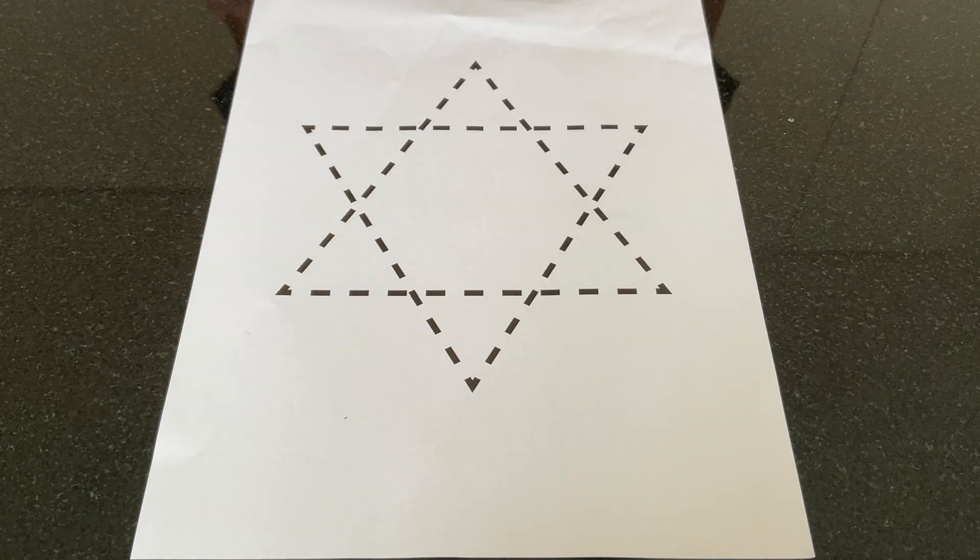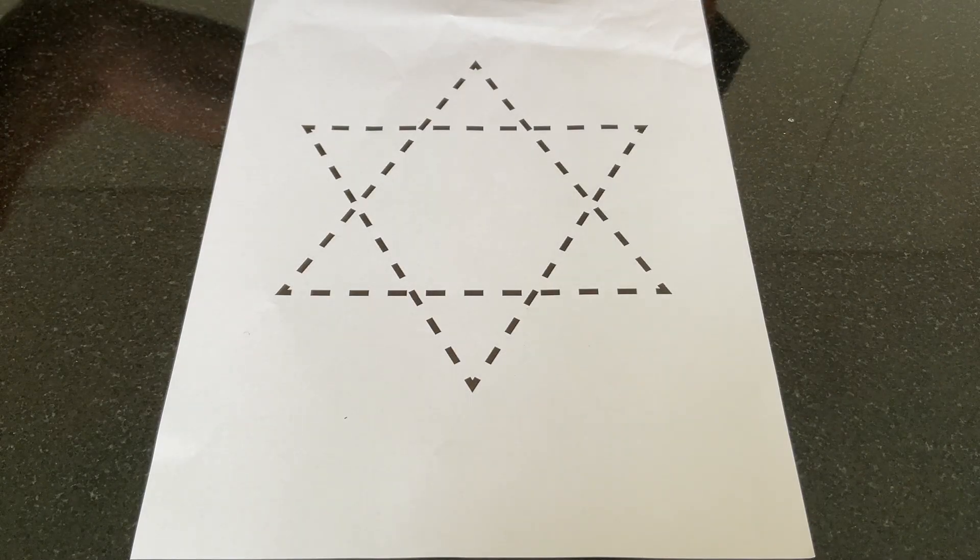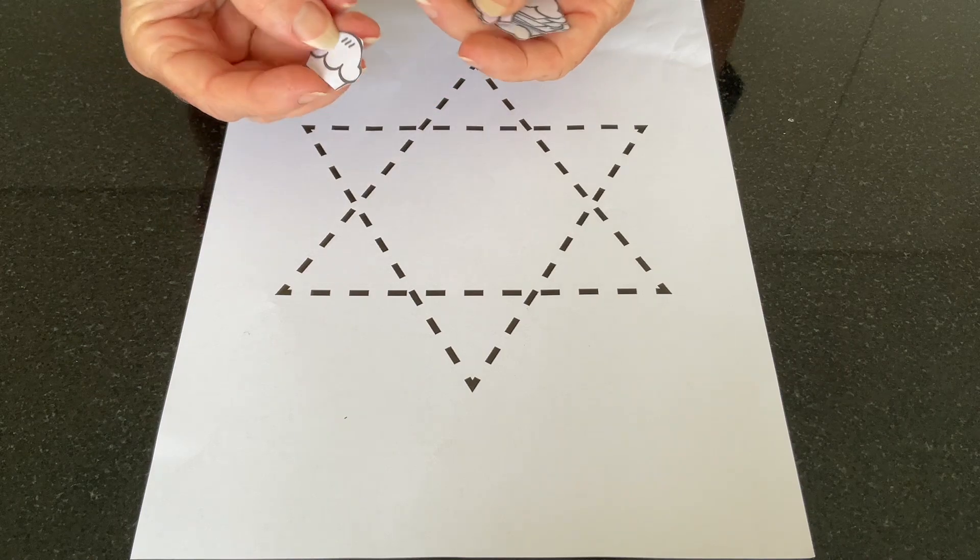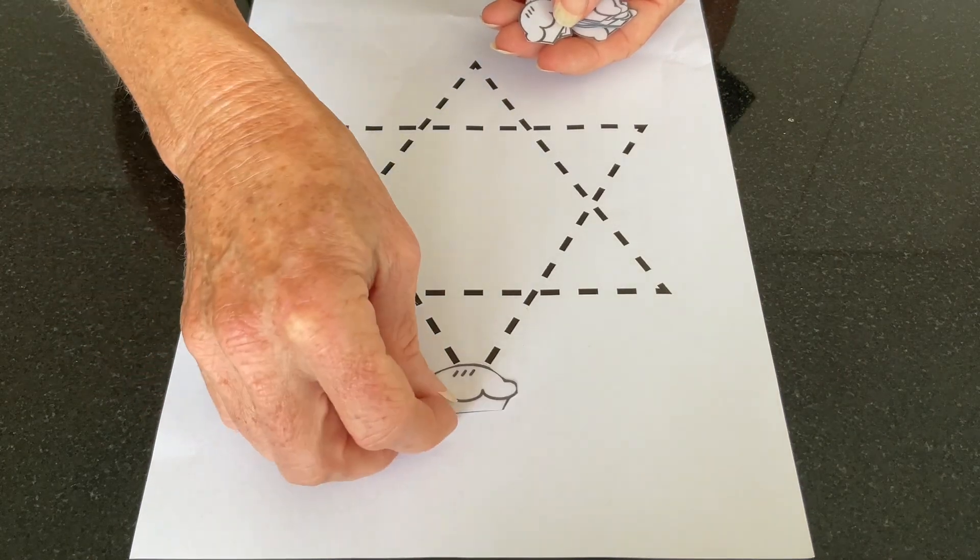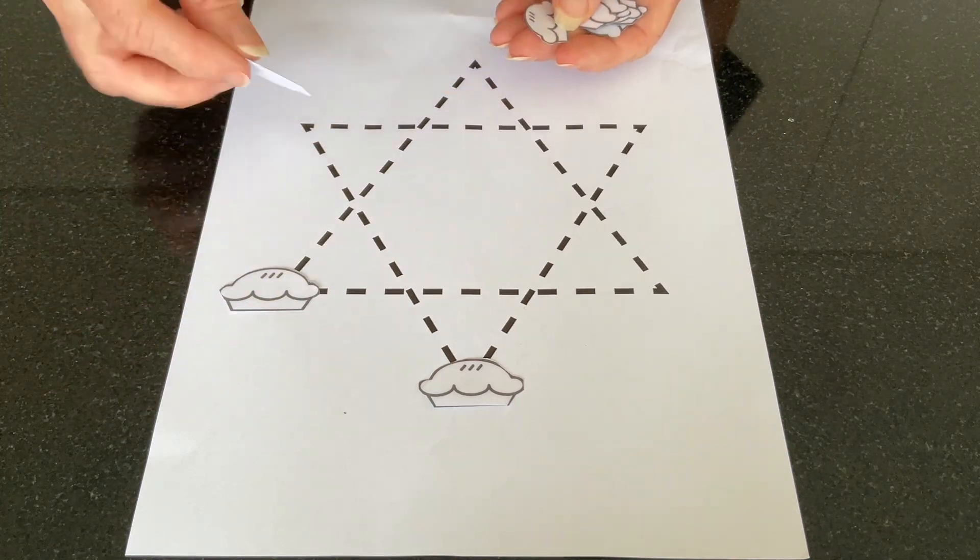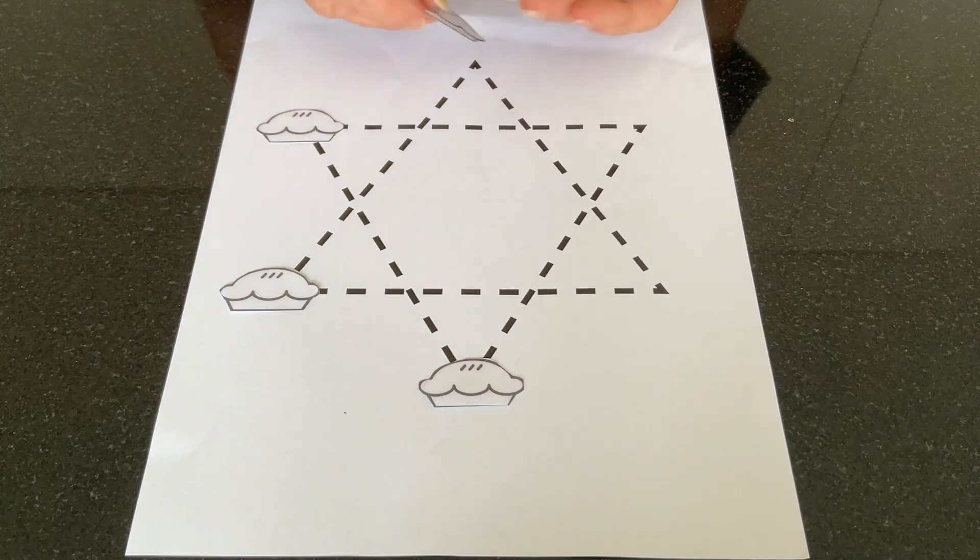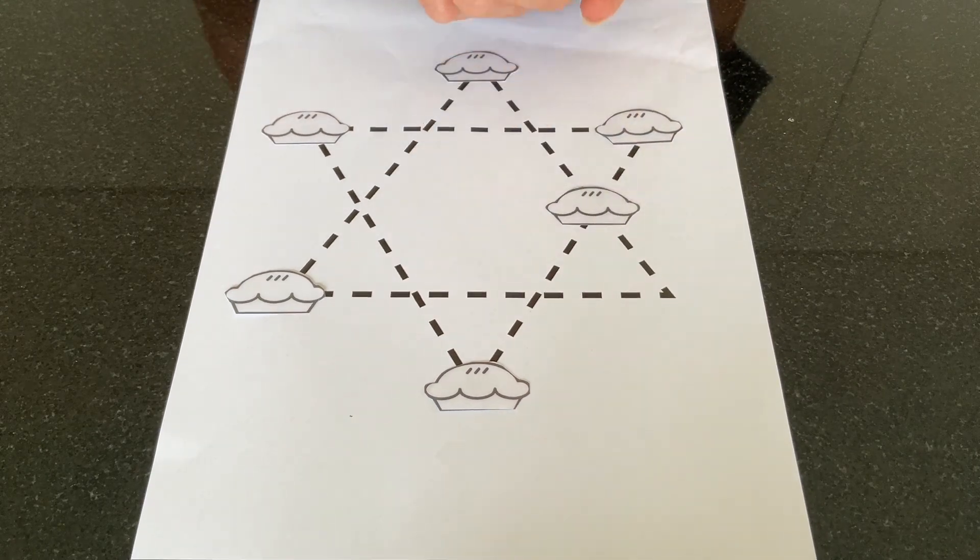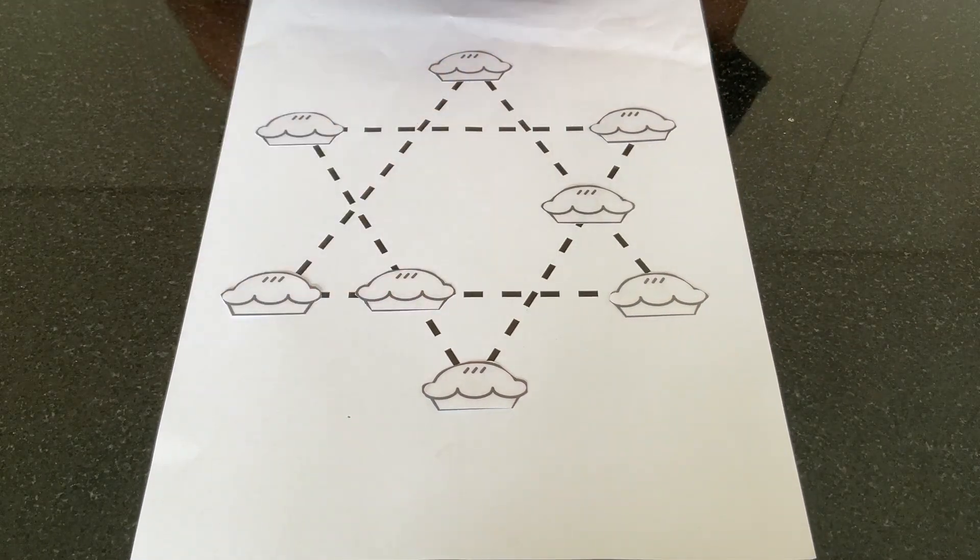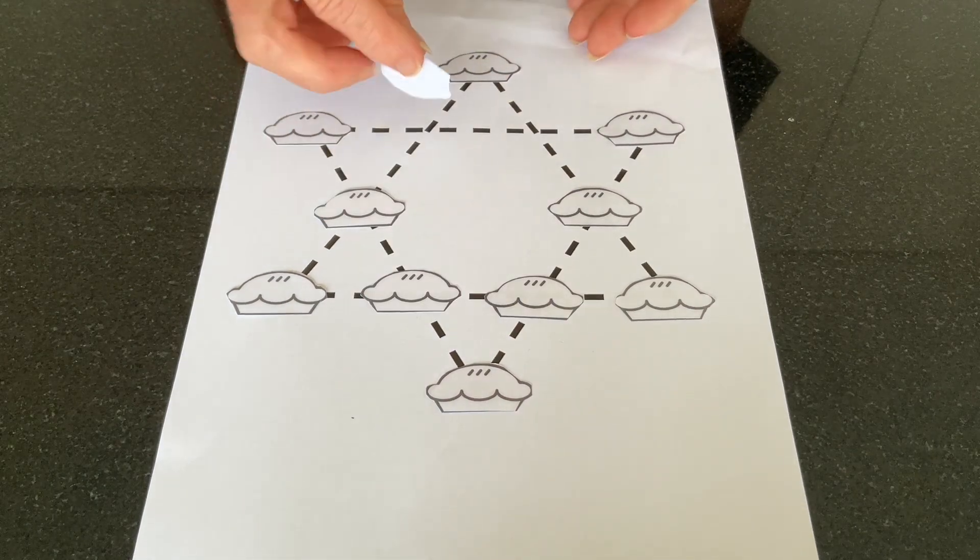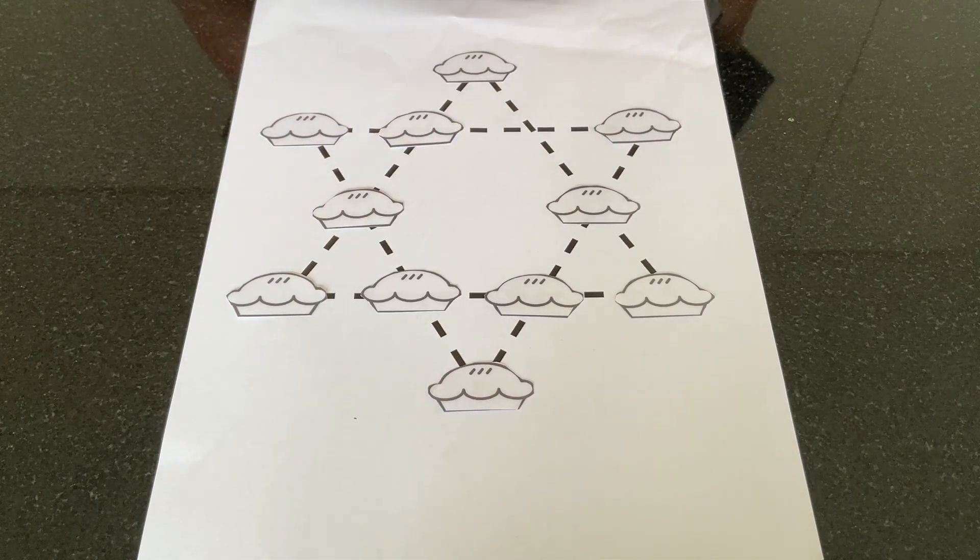Now let's take a look at the 12 mince pies puzzle. I've cut out 10 mince pies, or these might be meat pies. Place them on each of these spaces on the interconnected triangles. You'll end up with six rows of four pies.